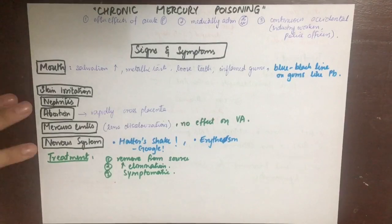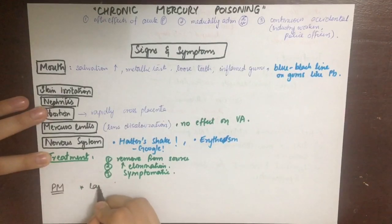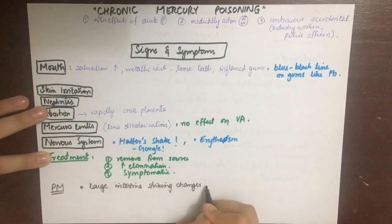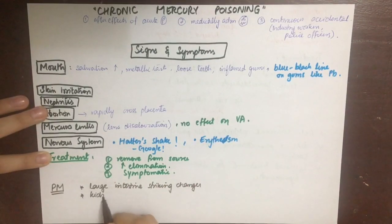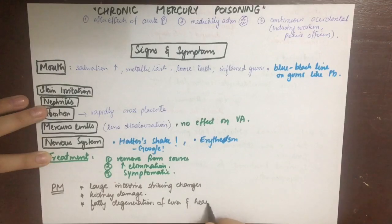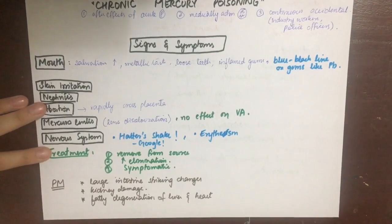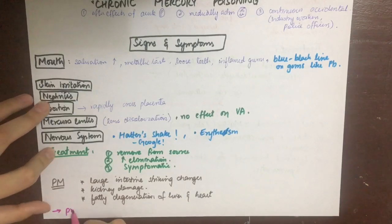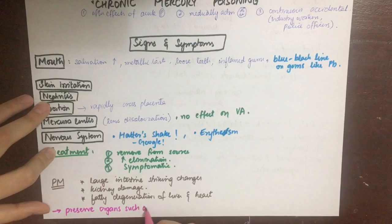The post-mortem appearance in chronic mercury poisoning shows major findings in the large intestine due to re-excretion of mercury. Kidney damage leads to tubular nephritis. Fatty degeneration of the liver and cardiac muscle will also be seen. In mercury or arsenic poisoning, other organs such as bone, teeth, hair, and nails should be preserved as specimens, since mercury is deposited in them.